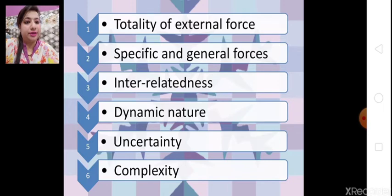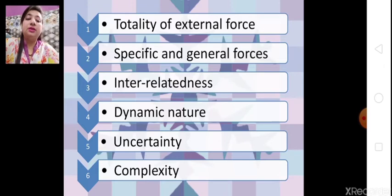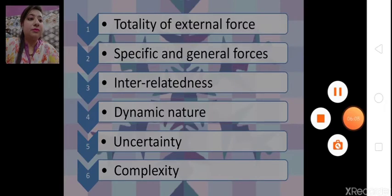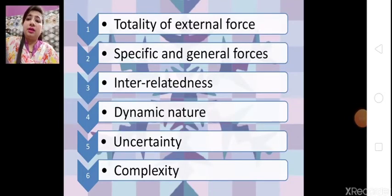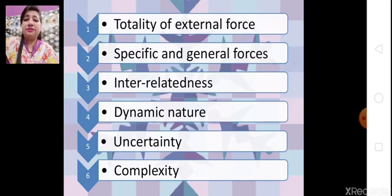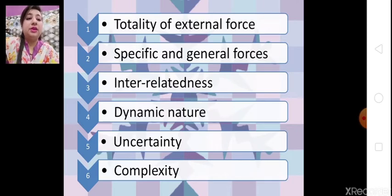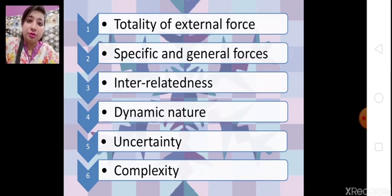Next is interrelatedness. These forces are related to each other — internally related. For example, a change in the lifestyle of people: nowadays many people work on their health, start going to the gym, do yoga, and this also increases the demand for sugar-free and fat-free products, so it affects the whole market.